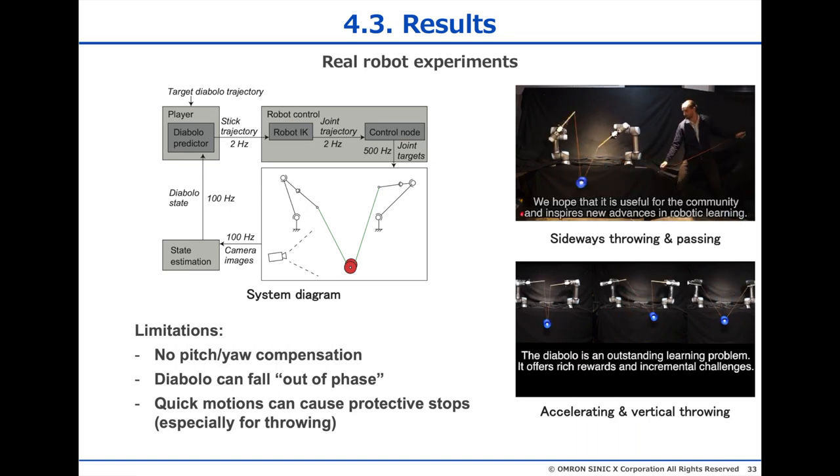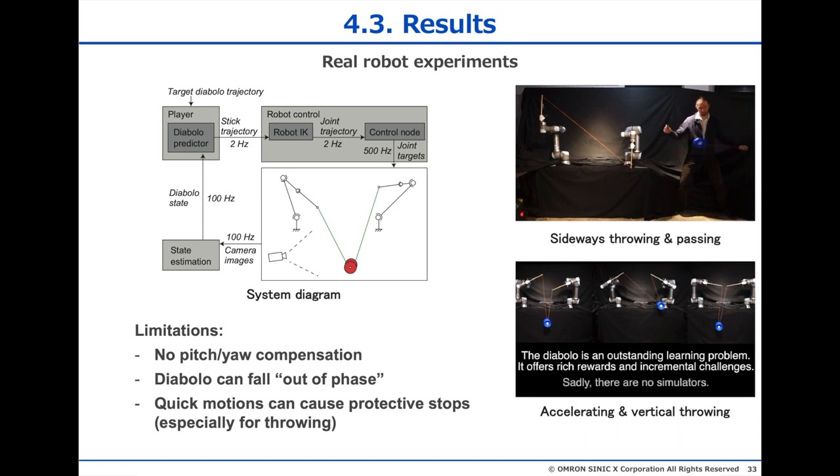Finally, quick motions like throwing required sudden stops, which would often result in protective stops with the UR robots that were used.